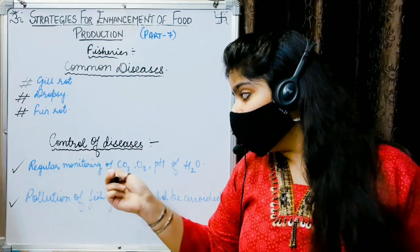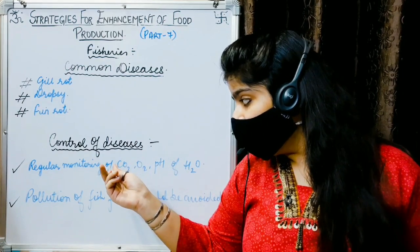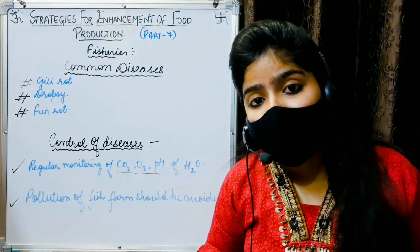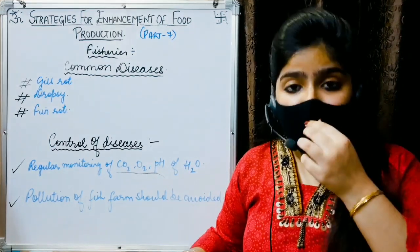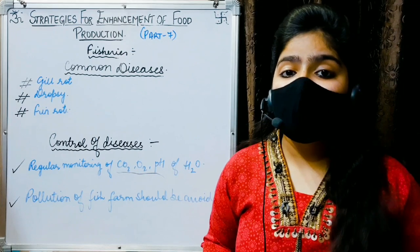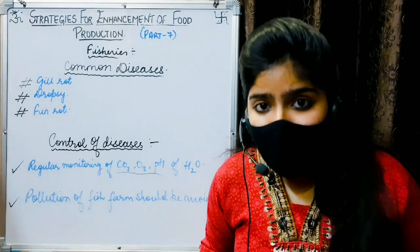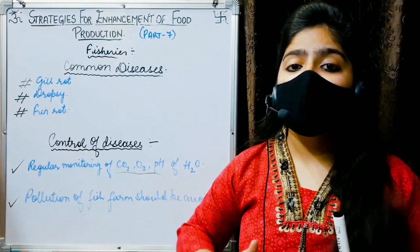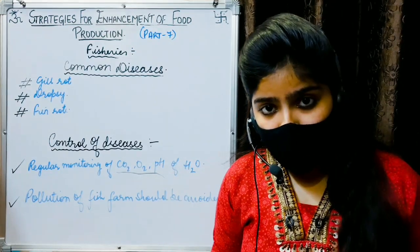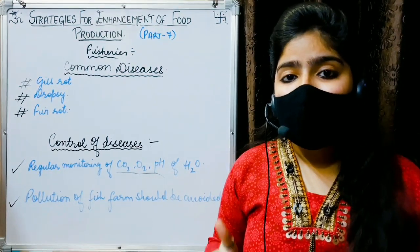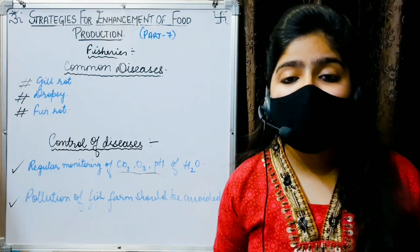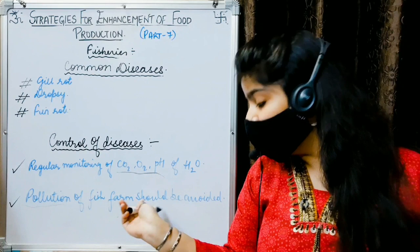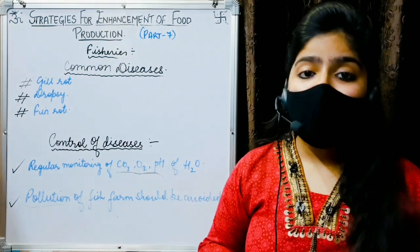Now let's talk about control of diseases. Regular monitoring of carbon dioxide, oxygen, and pH level is needed — time-to-time check-up. If you catch a big problem early, you can handle it. The most important thing is that pollution of fish farms should be avoided.